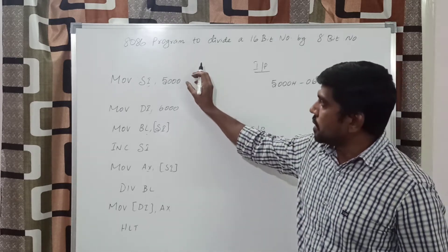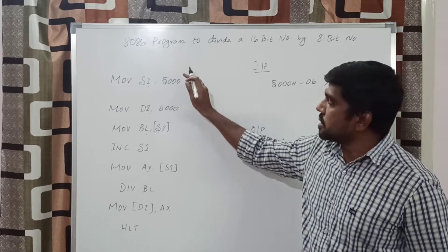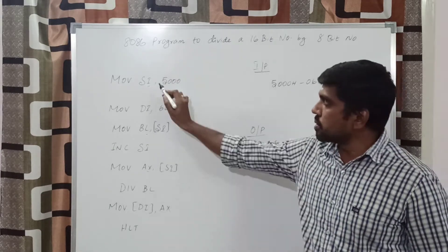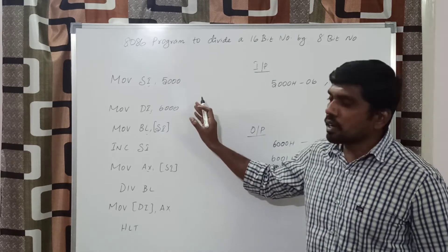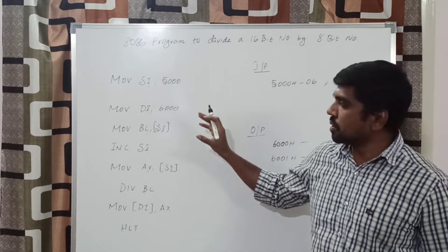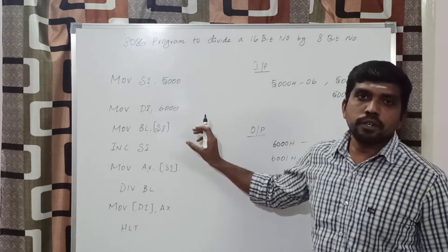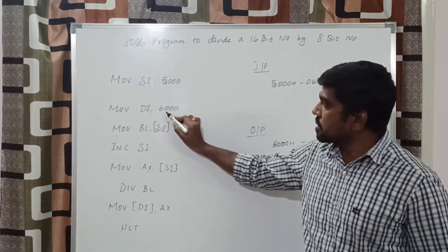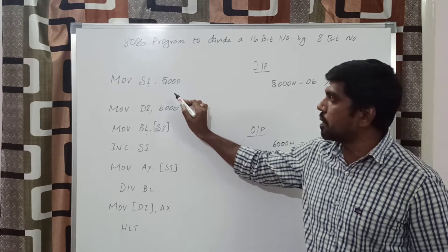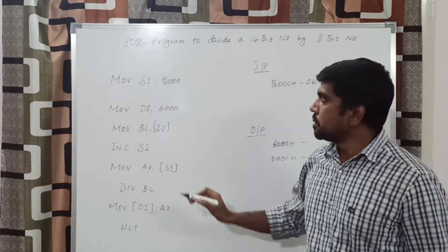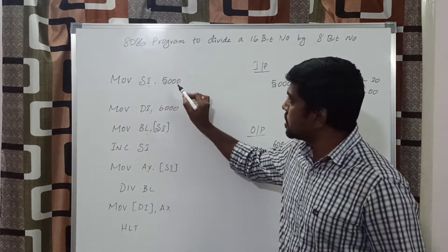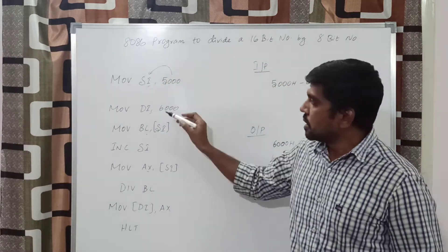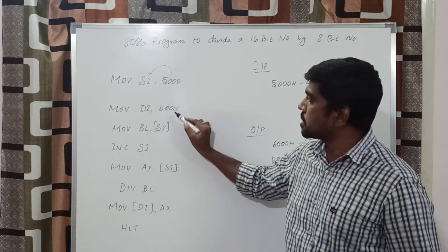Where you get the data, that memory location is 5000h, and this memory location is stored in the SI register — the source index register. The second instruction declares the output location, which is memory location 6000h, stored in DI. The first instruction MOV SI, 5000h transfers 5000h to the source index. The second instruction MOV DI, 6000h.